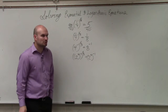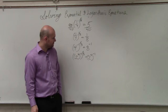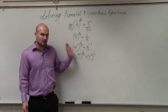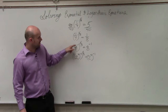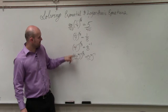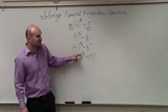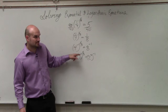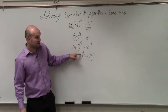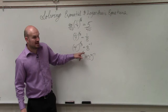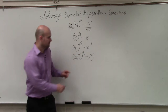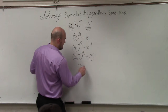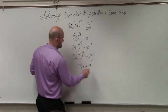Now remember the power rule, ladies and gentlemen. When you have an exponent raised to another power, you're multiplying. So in reality, I'm doing 2 squared raised to the negative first — you'd multiply 2 times negative 1, which would be negative 2. And then multiply that by x over 3. So therefore, I get an equation: negative 2 over 3 x equals negative 3.